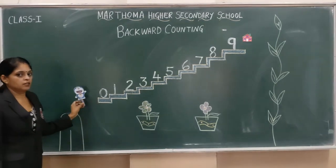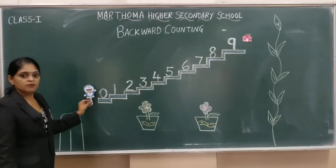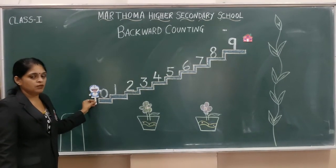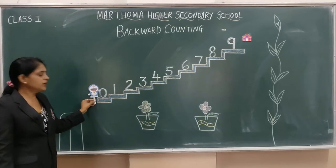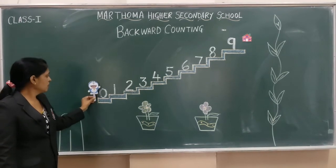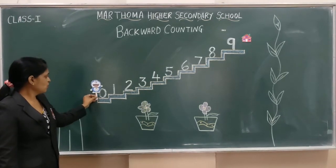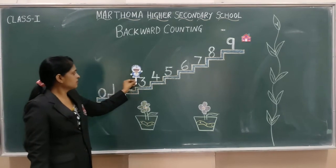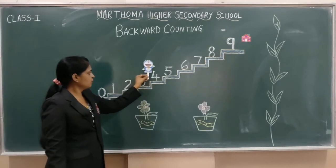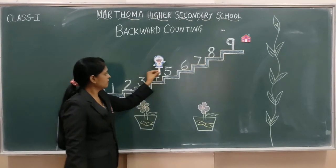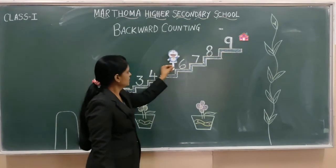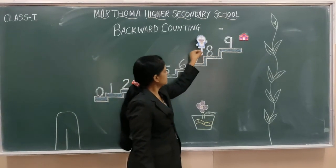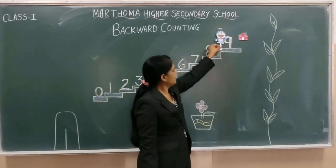Again, he started counting from 0 to 9 — smaller number to bigger number: 0, 1, 2, 3, 4, 5, 6, 7, 8, 9.